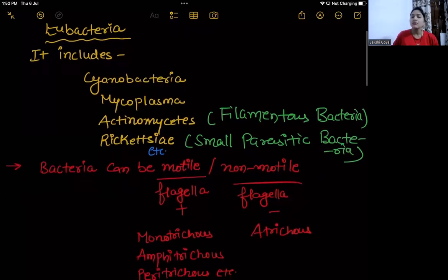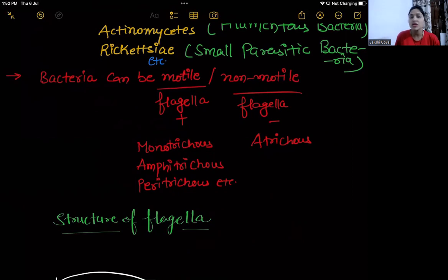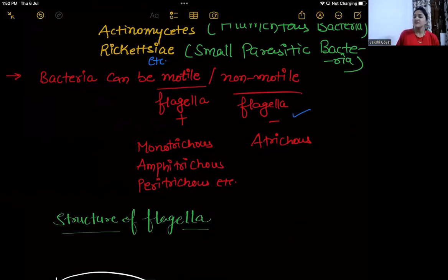Bacteria can be motile or non-motile — we have talked about this in the Cell: Unit of Life. If a bacterium is motile, flagella are present; if non-motile, flagella are absent. So plus means present and minus means absent. If there is no flagella, we say it is atrichous.